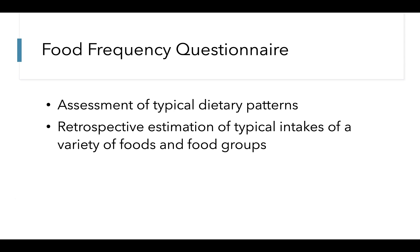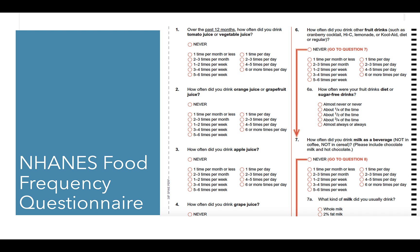A food frequency questionnaire is a large questionnaire that assesses typical dietary patterns by having participants give a retrospective estimation of their typical intakes of a wide variety of foods, food groups, and beverages. Here is an example from the U.S.'s National Health and Nutrition Examination Survey, or NHANES, which is an ongoing survey of Americans' health behaviors and outcomes. Questions assess the respondents' intakes of a wide variety of foods; for example, how often over the past 12 months the respondent drank tomato juice or vegetable juice, ranging from never to six or more times per day.